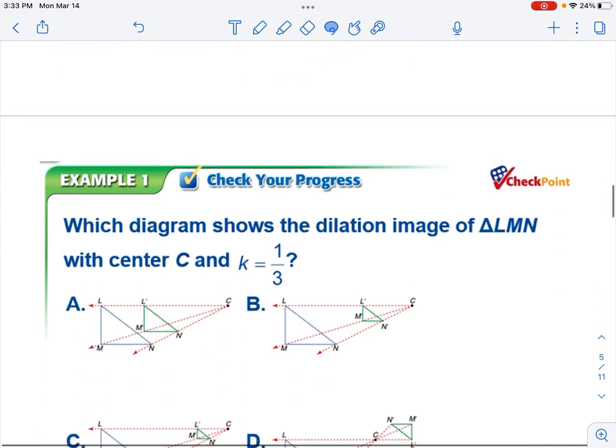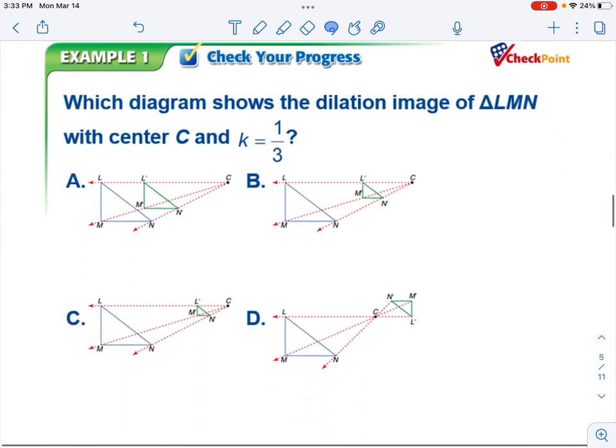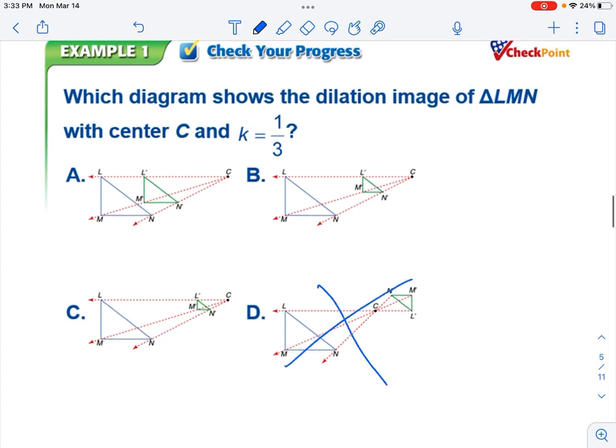Alright. So our next one, they're kind of arbitrary examples. Now our K value is less than 1, which means we have a reduction. D is definitely out. But A, B, and C are being reduced. Our image, L' and N' are all smaller on each of these.